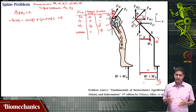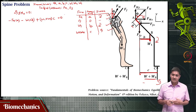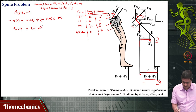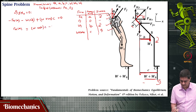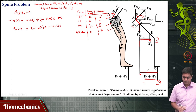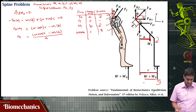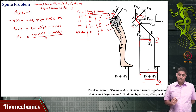Simplifying: Fm times a equals (W plus W naught) times c minus W1 times b. Therefore, Fm equals [(W plus W naught) times c minus W1 times b] divided by small a. This is the expression for the muscle force Fm.